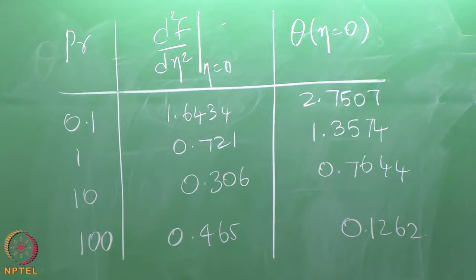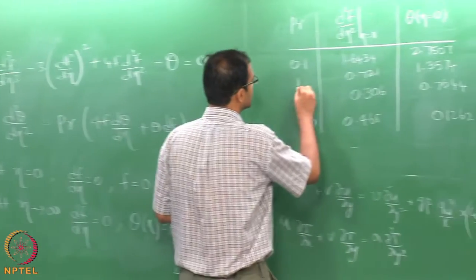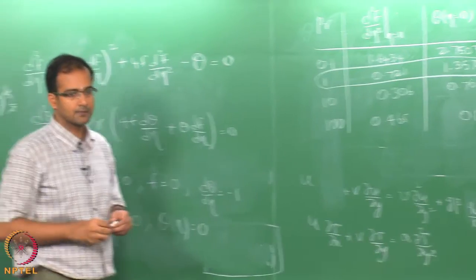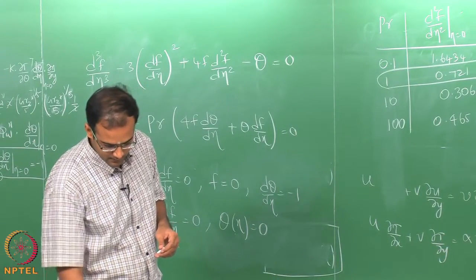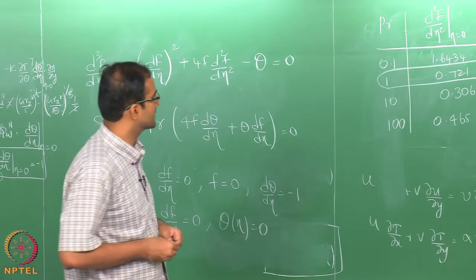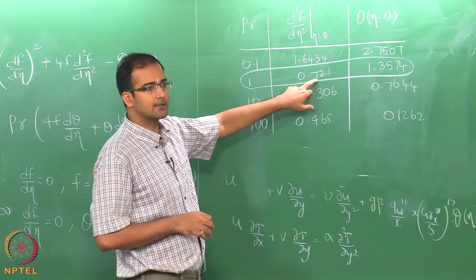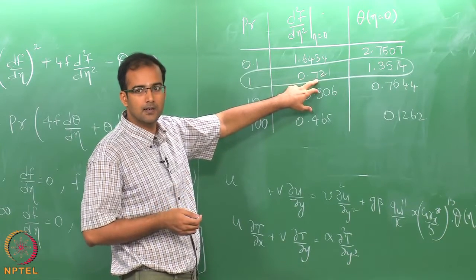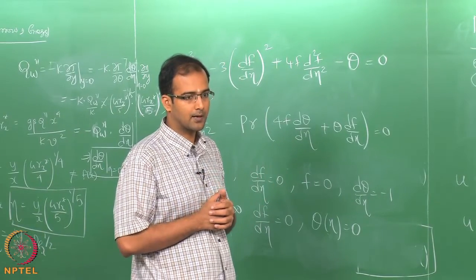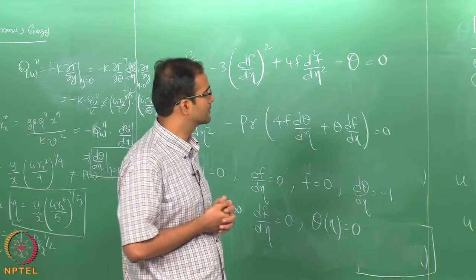For Prandtl number around 0.72, the constant wall temperature case gave approximately 0.68–0.69 for d²f/d_eta²; in the present case the velocity gradient is slightly higher. Since the flow and temperature fields are strongly coupled, the velocity gradient is also a function of the boundary condition. So comparing the two cases, the constant heat flux case gives a marginally higher velocity gradient than the constant wall temperature case.